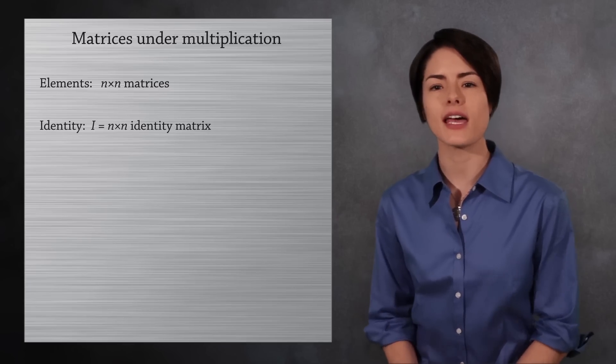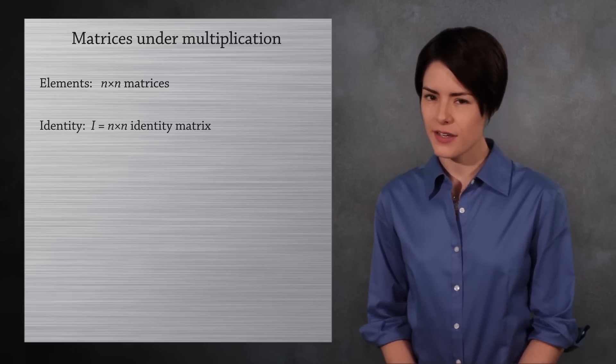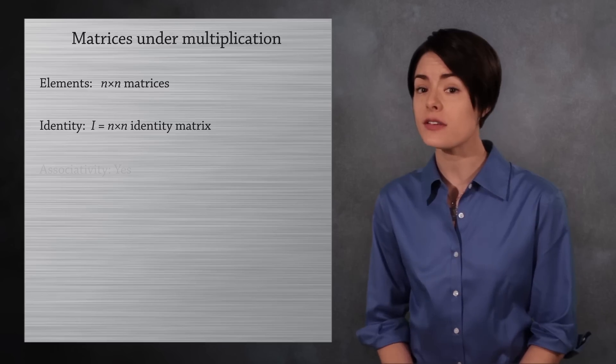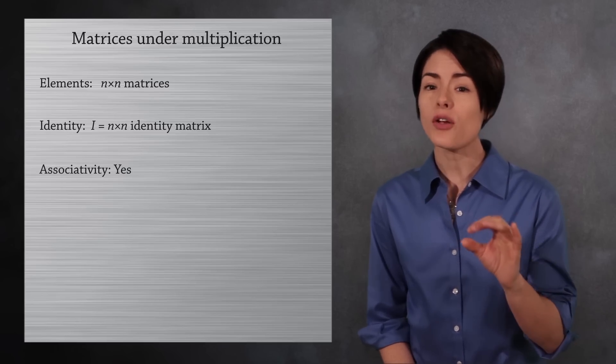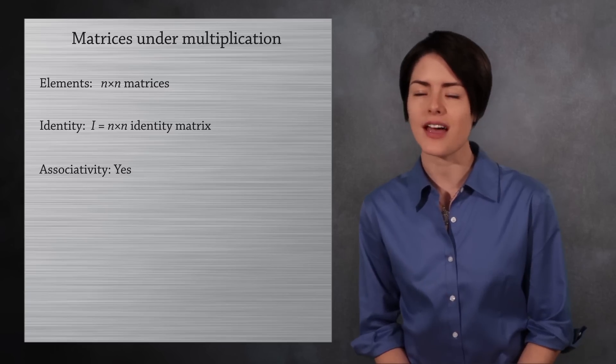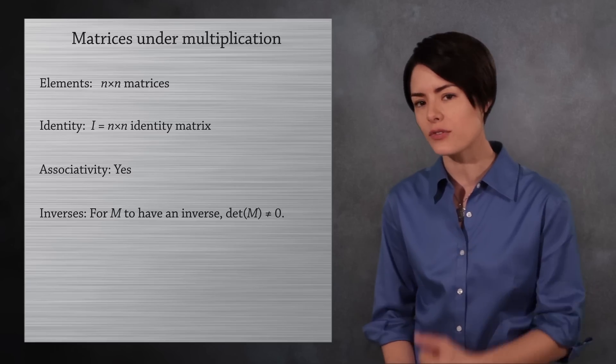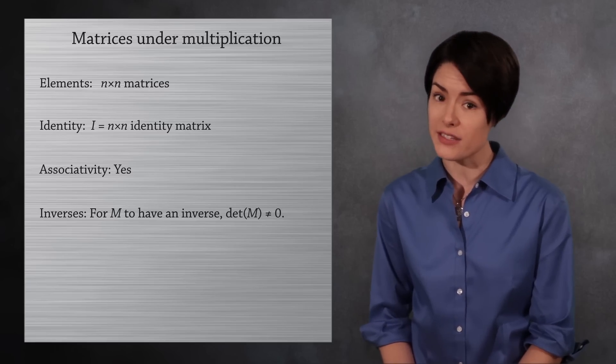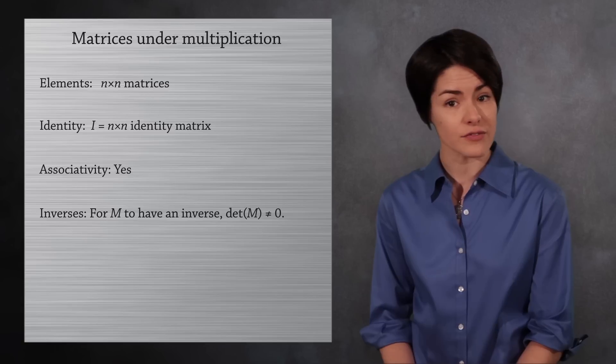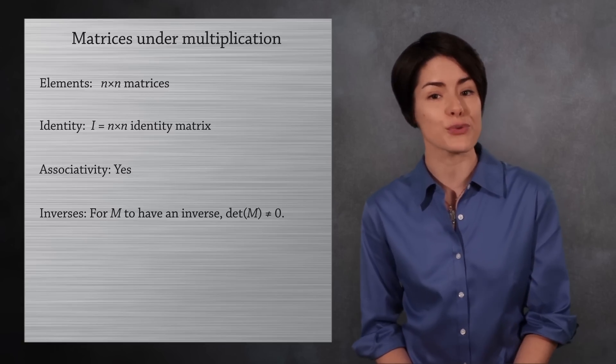The identity element is the n by n identity matrix. Multiplication with real matrices is associative. All that remains is to make sure each matrix has an inverse. To have an inverse, a matrix must have a non-zero determinant. If the determinant is zero, then the matrix does not have an inverse. With this final requirement, we have a group.